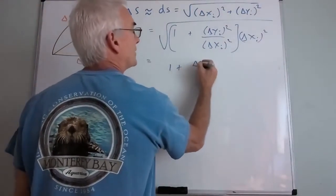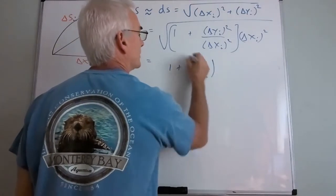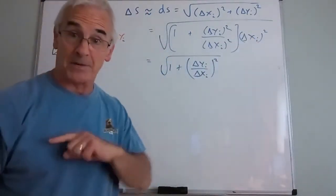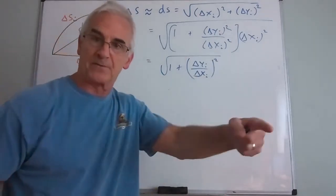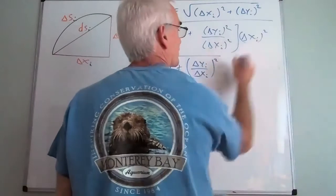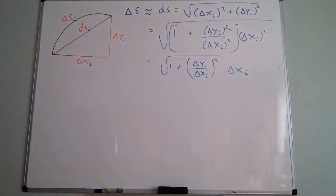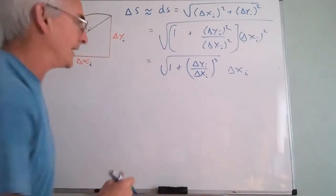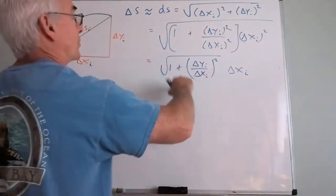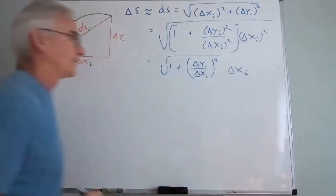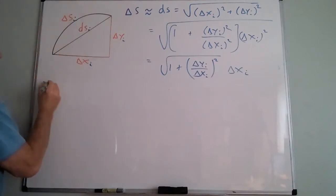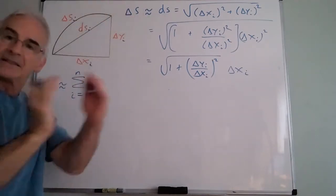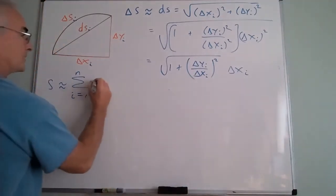Since Δx cannot be negative, I can pull it outside the square root. So Δsᵢ = √(1 + (Δy/Δx)²) · Δx. That kind of looks like the stuff that shows up in a Riemann sum — I've got a function and a Δx. Right now this is pure geometry; the length of the segment is exactly equal to this quantity.